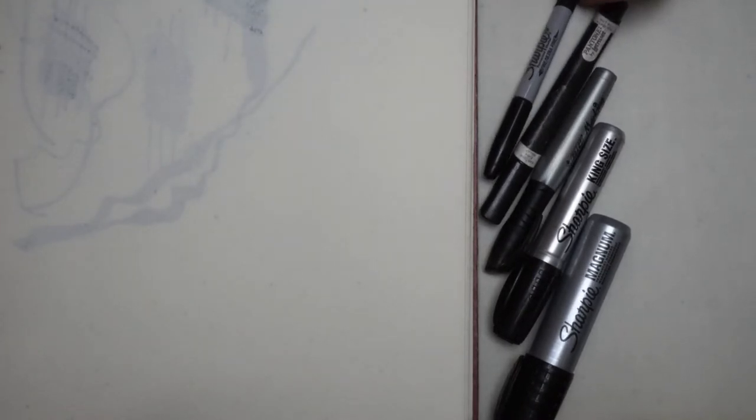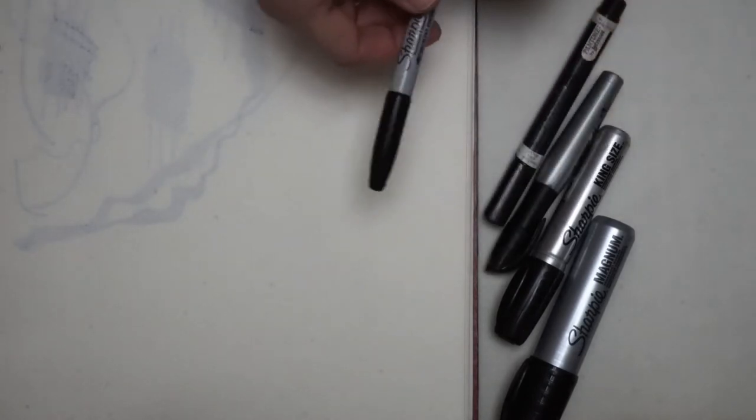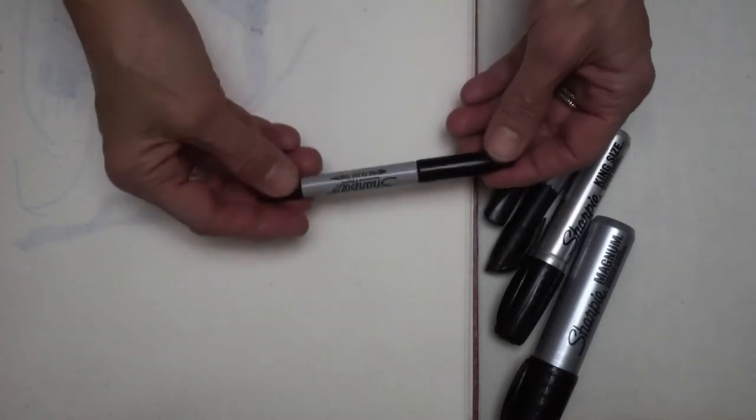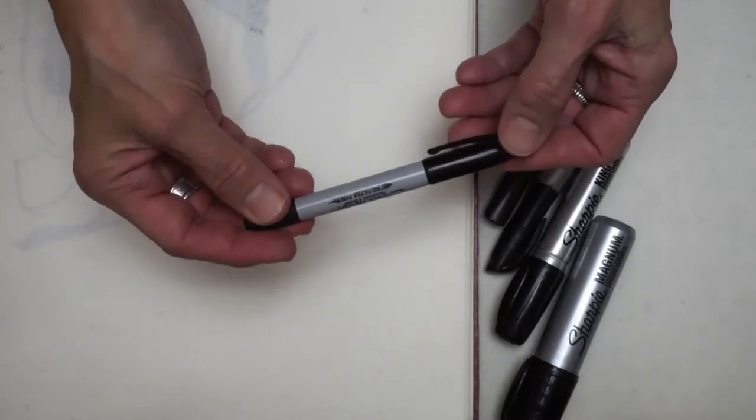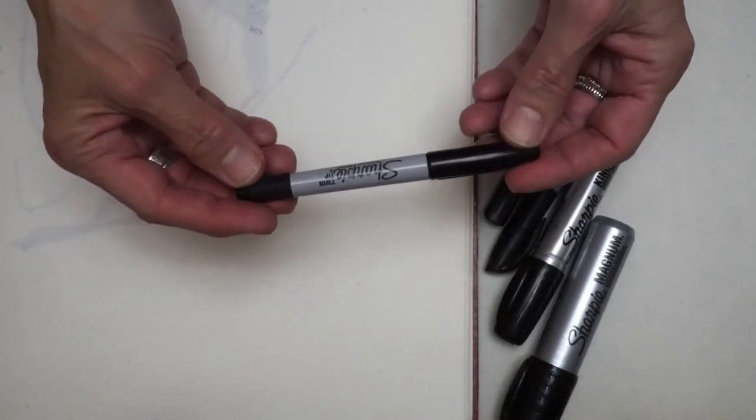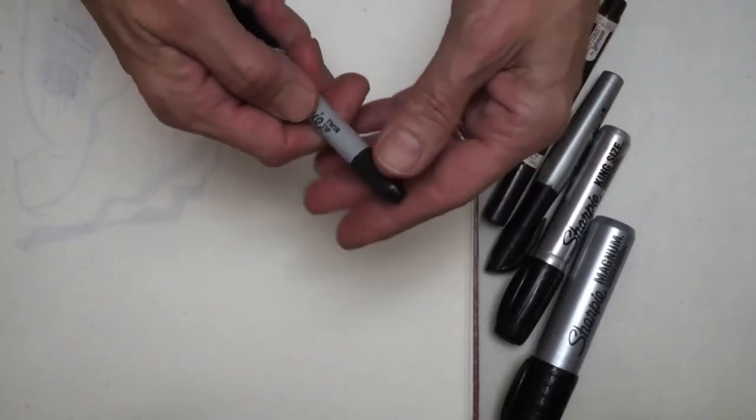In this video we focus on markers, black permanent markers. We've got three different brands: Bic, Sharpie, and the Pantone pen. I'm gonna start with the twin tip Sharpie marker, starting with the ultra fine point.